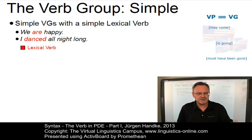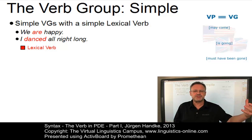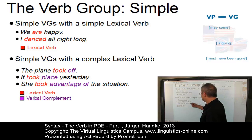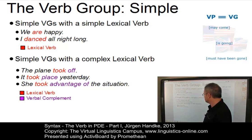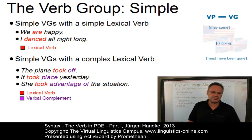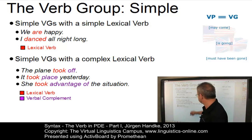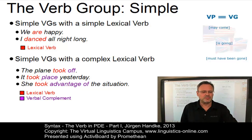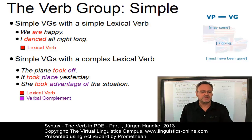In an extended form, a simple verb group contains a lexical verb plus a specific verbal complement. For example: 'The plane took off' — with the particle off; 'It took place yesterday'; 'She took advantage of the situation'. We may have particles, noun phrases, or prepositional phrases as verbal complements within simple verb groups with complex verbs.